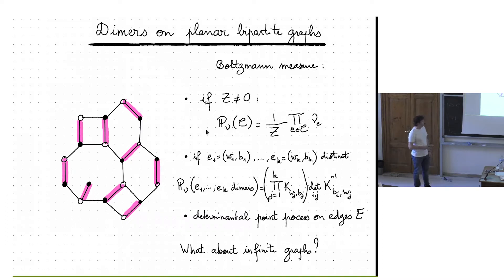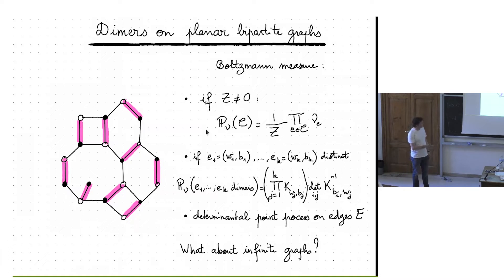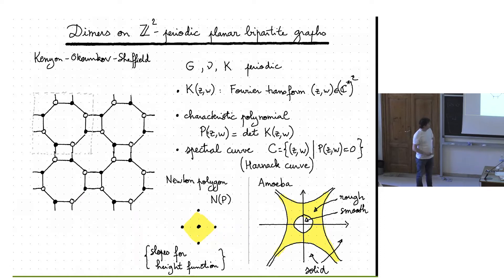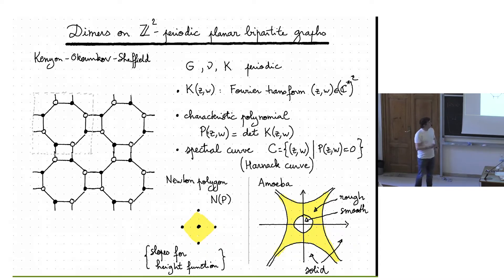The question is: how can you generalize this construction to infinite graphs? When you have an infinite graph, the partition function may become infinite, so there is no Boltzmann measure anymore. One major work in this direction was an article by Kenyon, Okounkov, and Sheffield in 2005, where they explain how to describe generalizations of the Boltzmann measure in Z²-periodic planar bipartite lattices.